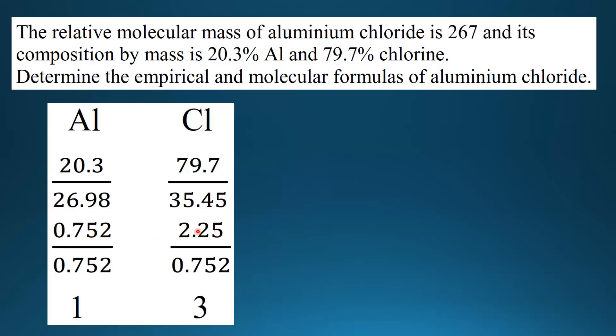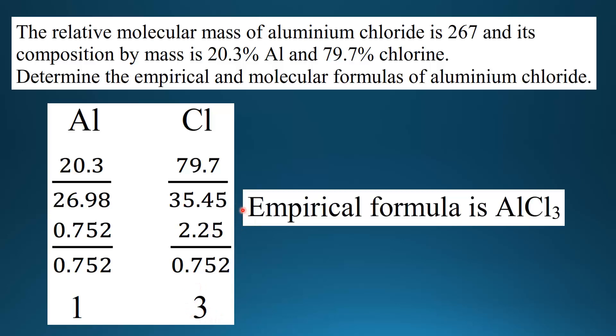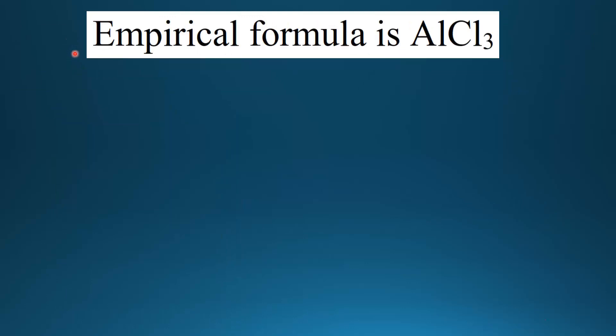The next step is to divide both of these by the lowest ratio. The lowest one here is 0.752. So divide 0.752 by itself to give 1, and divide 2.25 by 0.752 to give 3. Therefore the empirical formula is AlCl3.